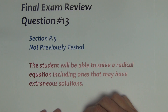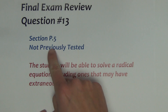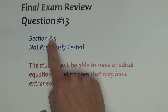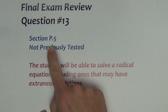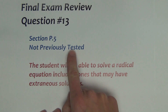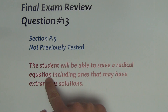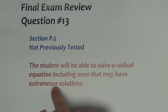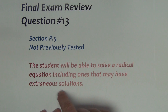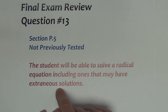Question 13 on the final exam comes from section P.5, one of the early ones in the year, and it has not been previously tested. The student will be able to solve radical equations. These equations may or may not involve extraneous solutions, and one of the examples will show what you'll see when you encounter an extraneous solution.